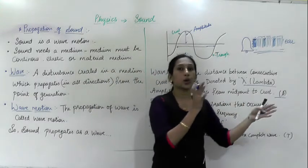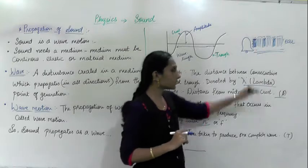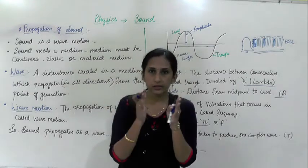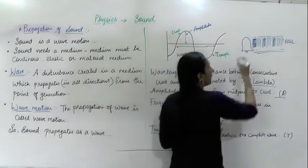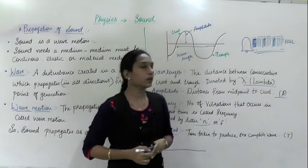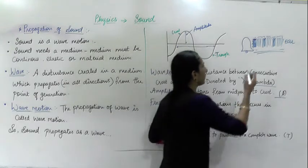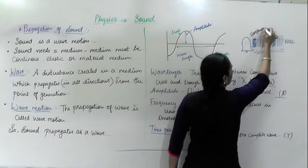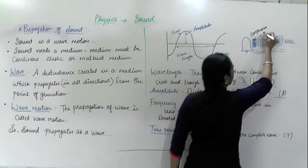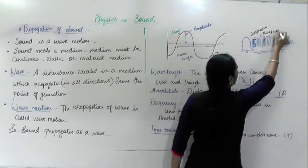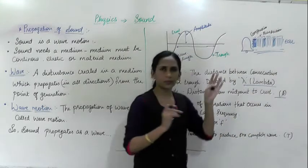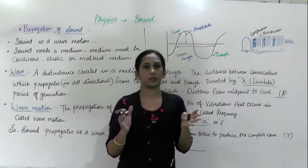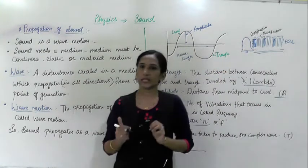Specific names are given to the high density and low density parts. Where the high density is, that part is called compression. The low density part is called rarefaction. Compression means the air molecules get compressed, that's why that part is called compression. Rarefaction means there is a low density part.